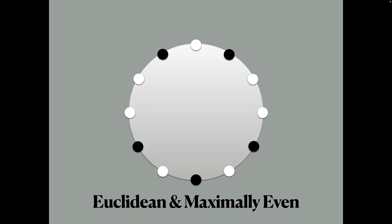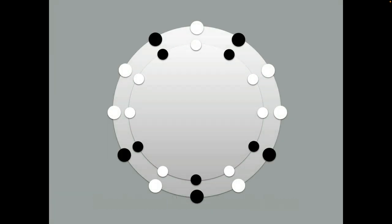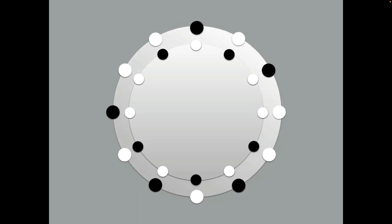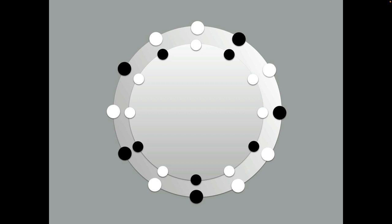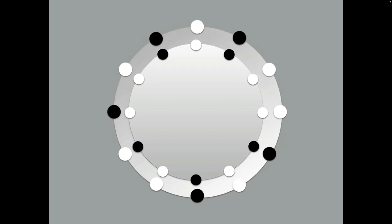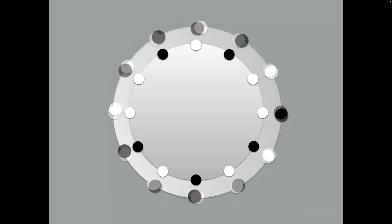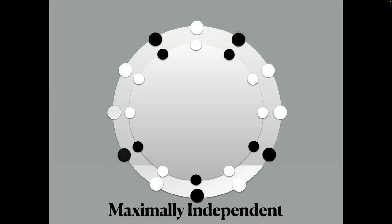It does in fact have another property, this diatonic cycle. If we rotate it, you'll notice that it never lines up until we get back to the beginning again. This is a property known as maximal independence. That's why we have seven modes.